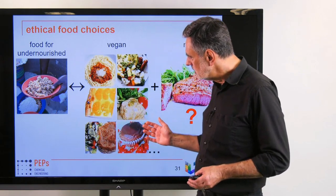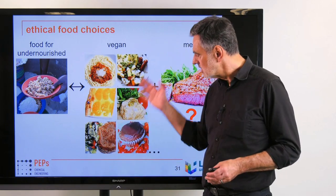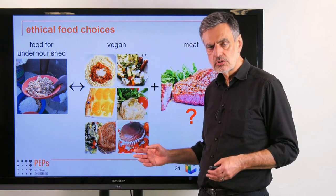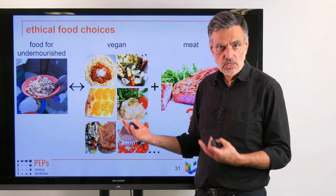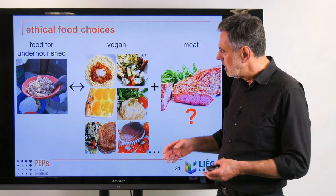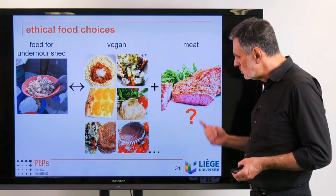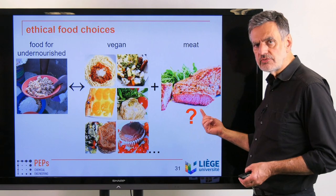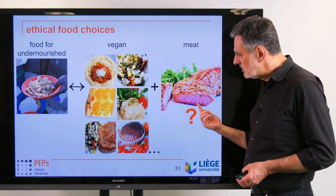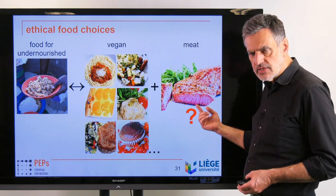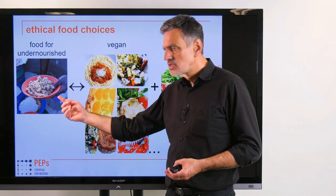If we instead used that directly to feed people rather than animals, we could increase the caloric supply for human nutrition by roughly 18%. Even if we don't eat exactly what animals eat, even 10% would count — adding on top of the other measures.